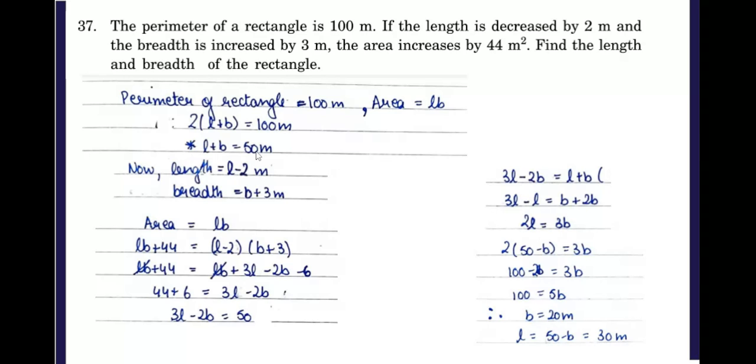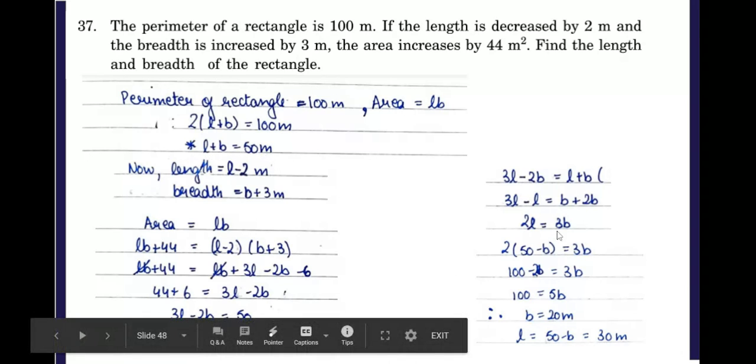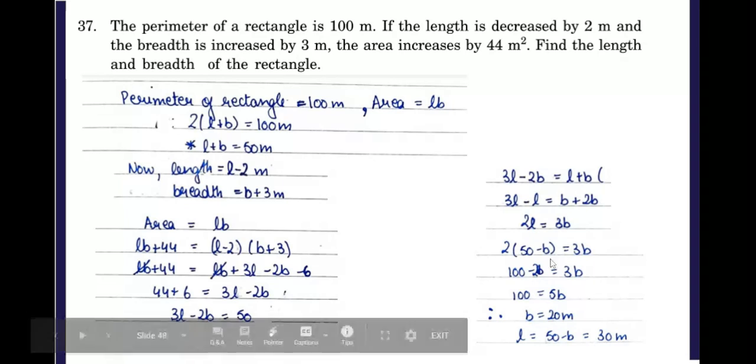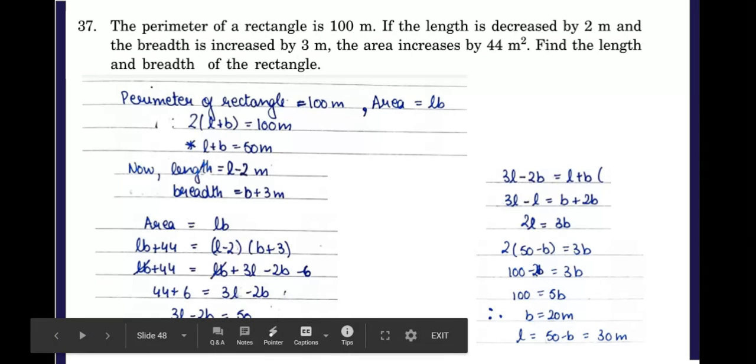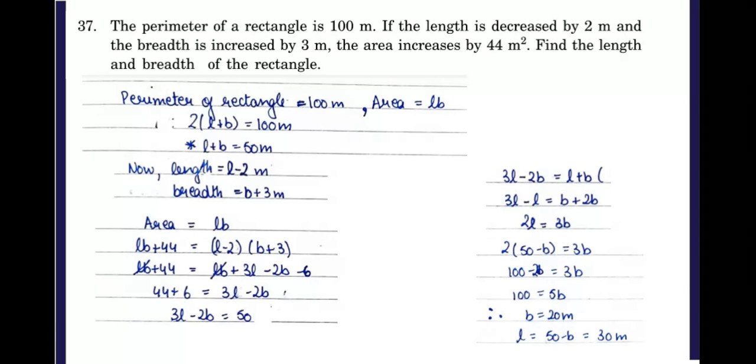From the equation L plus B equals 50, L comes out to be 50 minus B. We can substitute this at the place of L and calculate the breadth. When we simplify this, we get B equals 20 meters. When B is 20 meters, L comes out to be 50 minus 20, that is 30 meters.